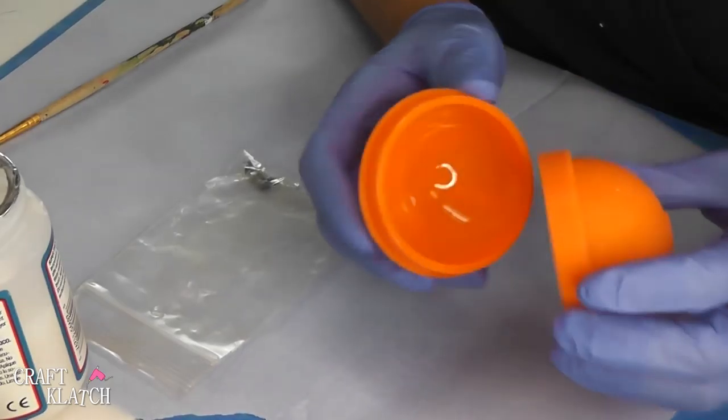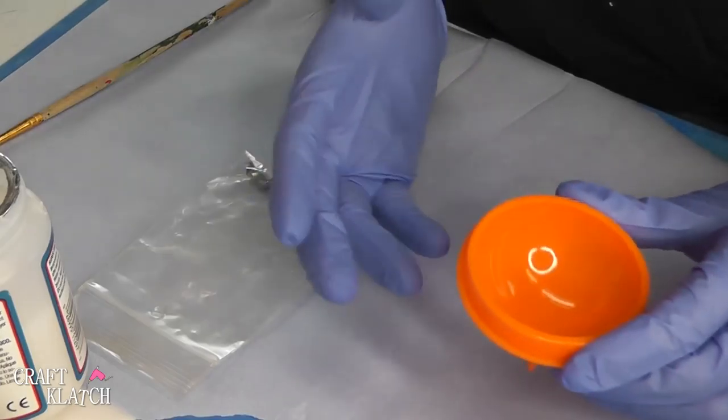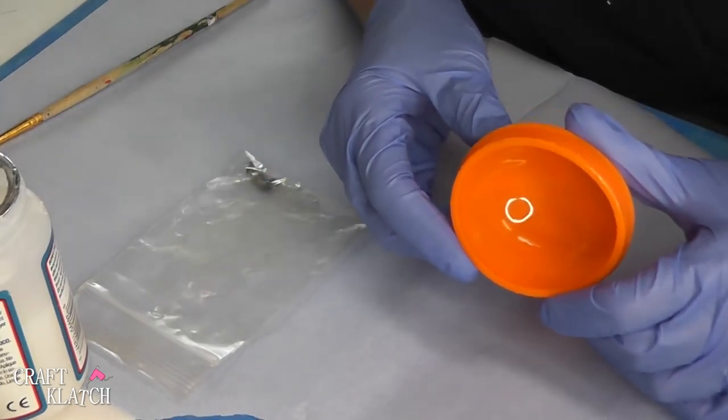So to make this paperweight, I have this ice cube making mold, but I'm only using the bottom. These are nice because they're shiny inside, so anything I put in there, when I take it out, it's going to be shiny too.